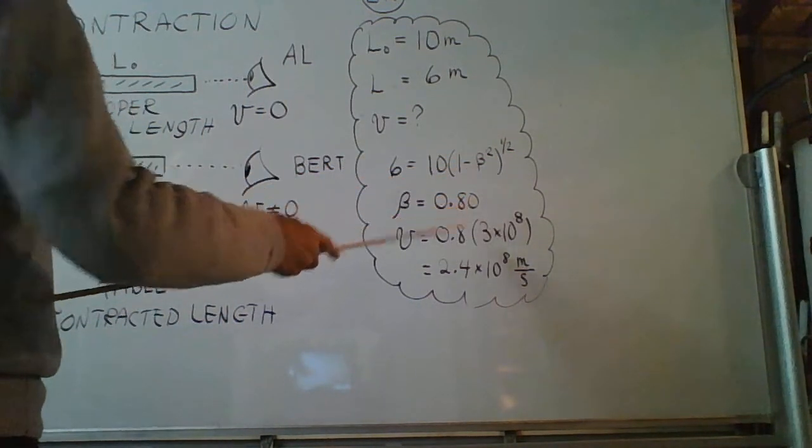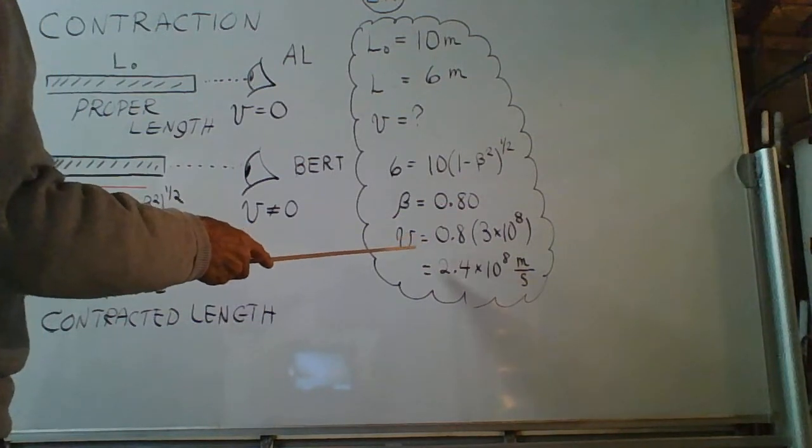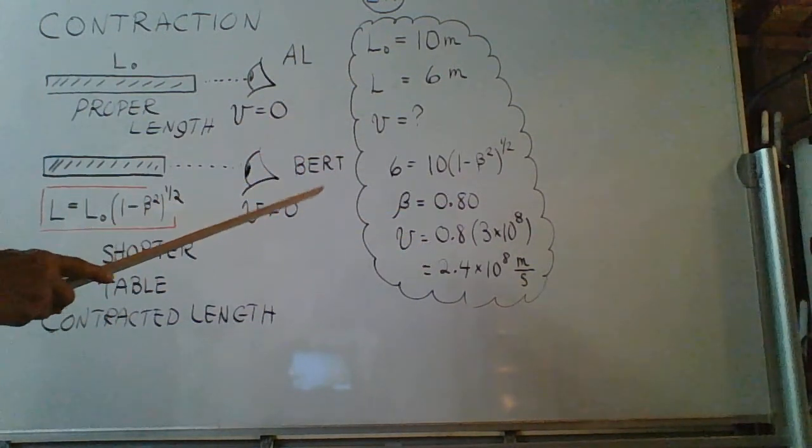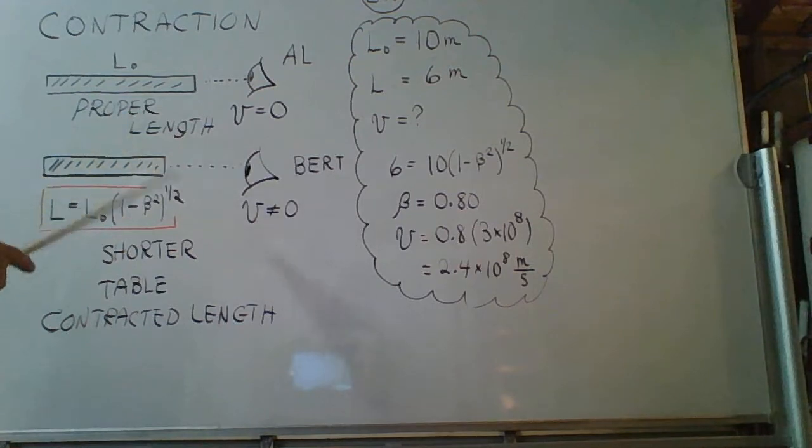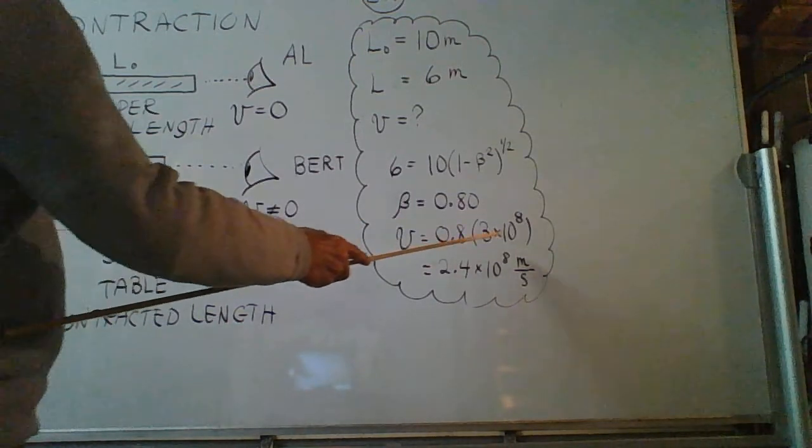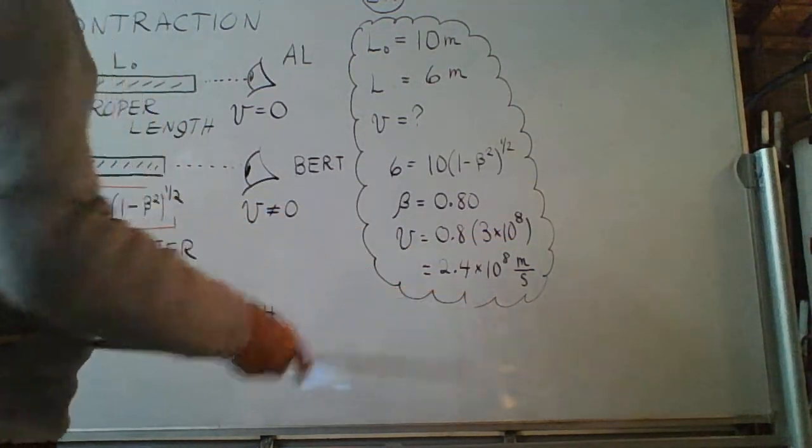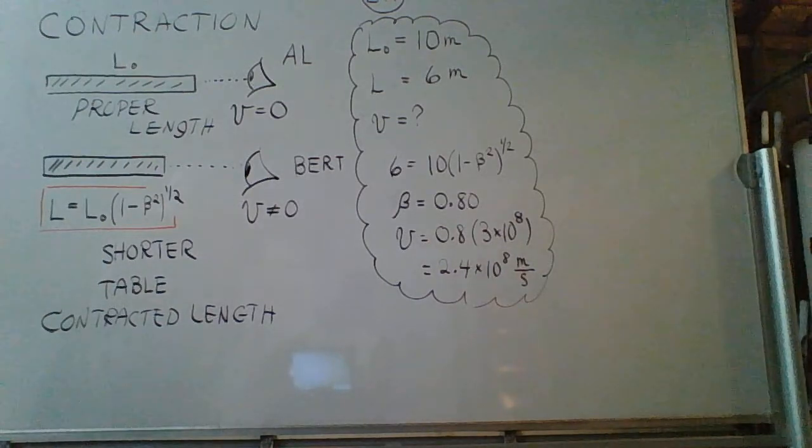We get 0.80. The speed of the object, or rather to say the speed of Bert relative to the table, is 8 tenths of the speed of light. Final result, 2.4 times 10 to the eighth meters per second.